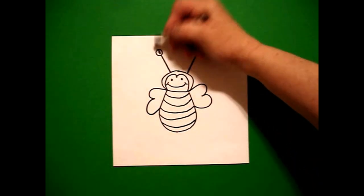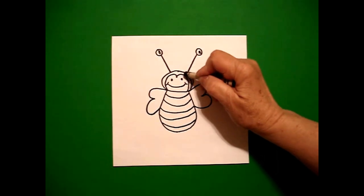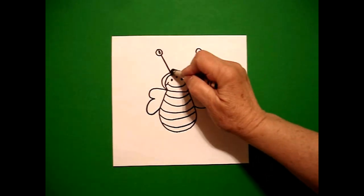My bee is really easy to color. I'm going to do his little antennas black. I'm going to do this little part around his face black.